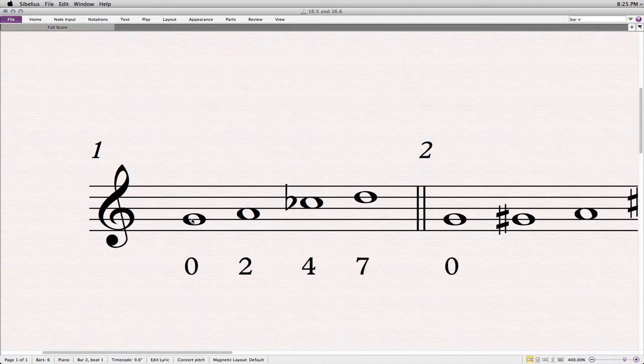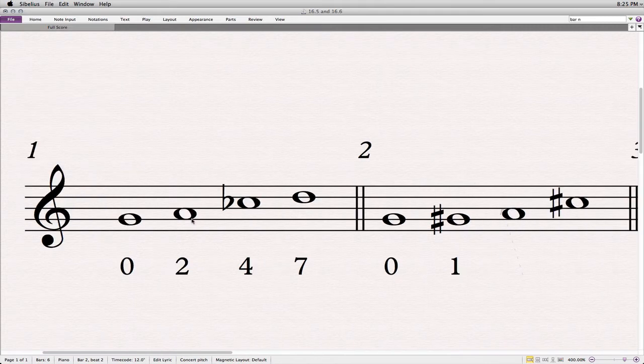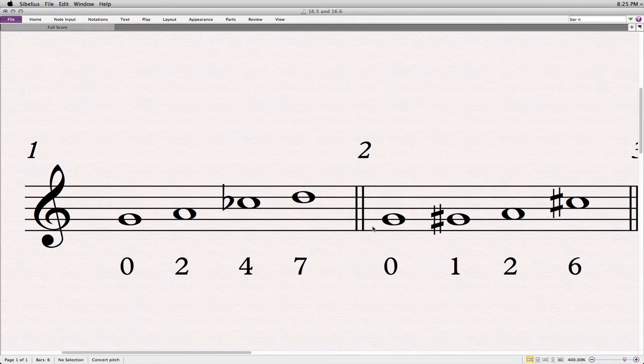The second one, zero, one, two, six. So I'm just writing down the intervals above the first one. Starts out with zero, goes up a half step, A is two half steps above G. C sharp is six half steps above G, tritone above. And I continue doing this for the rest of them.